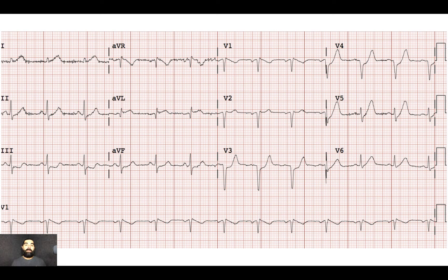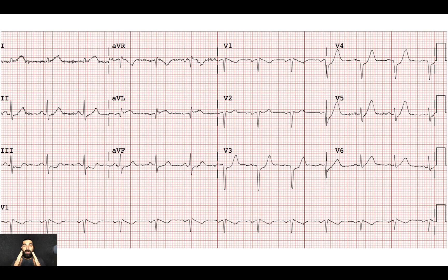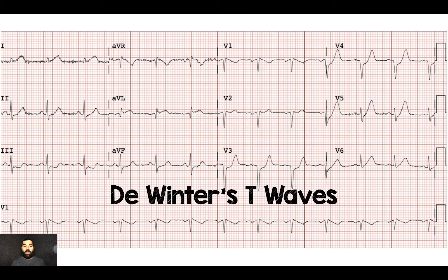There's a fourth T wave we haven't talked about — the DeWinter's T wave. If you look at leads V3 through V6, you can see this ST depression that kind of goes up into a large T wave that is symmetric on both sides, both going up and coming down. A DeWinter's T wave is when you see that ST depression with that symmetric hyperacute T wave.